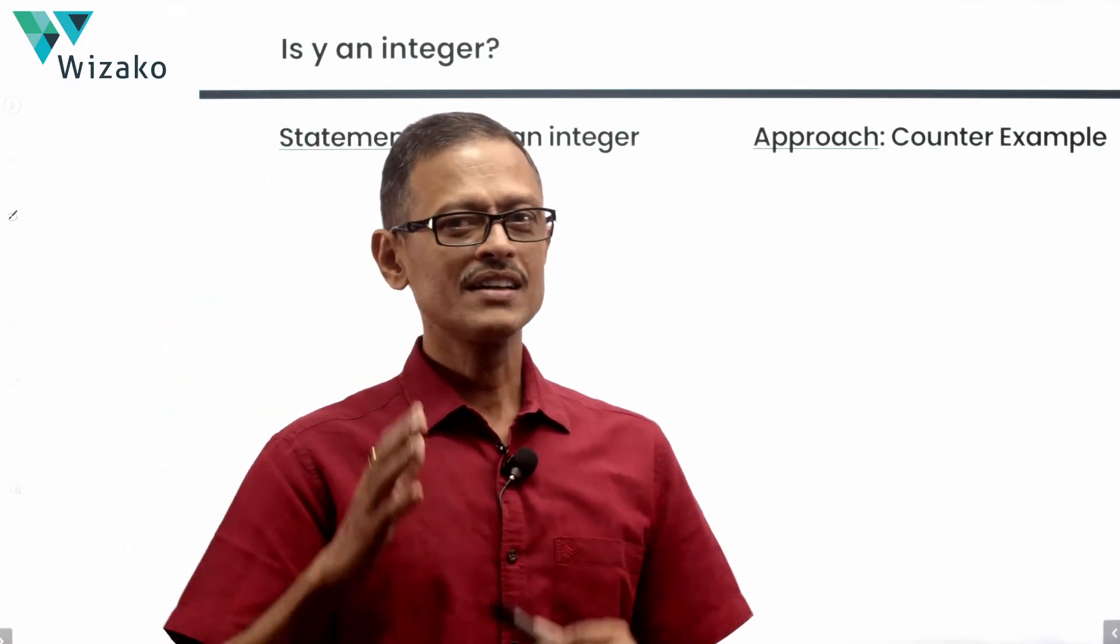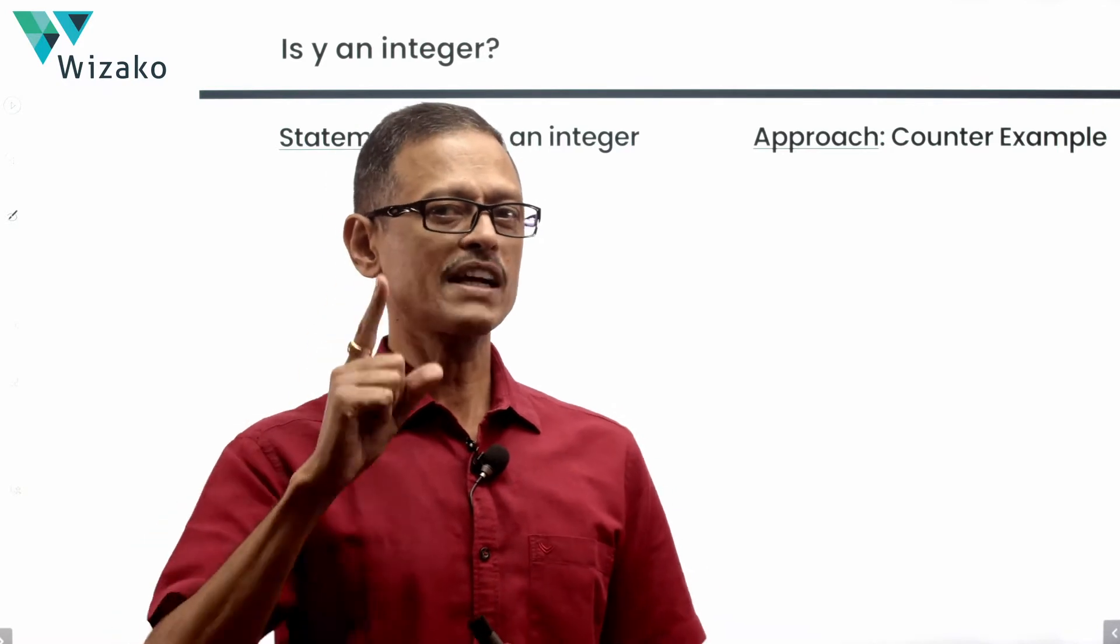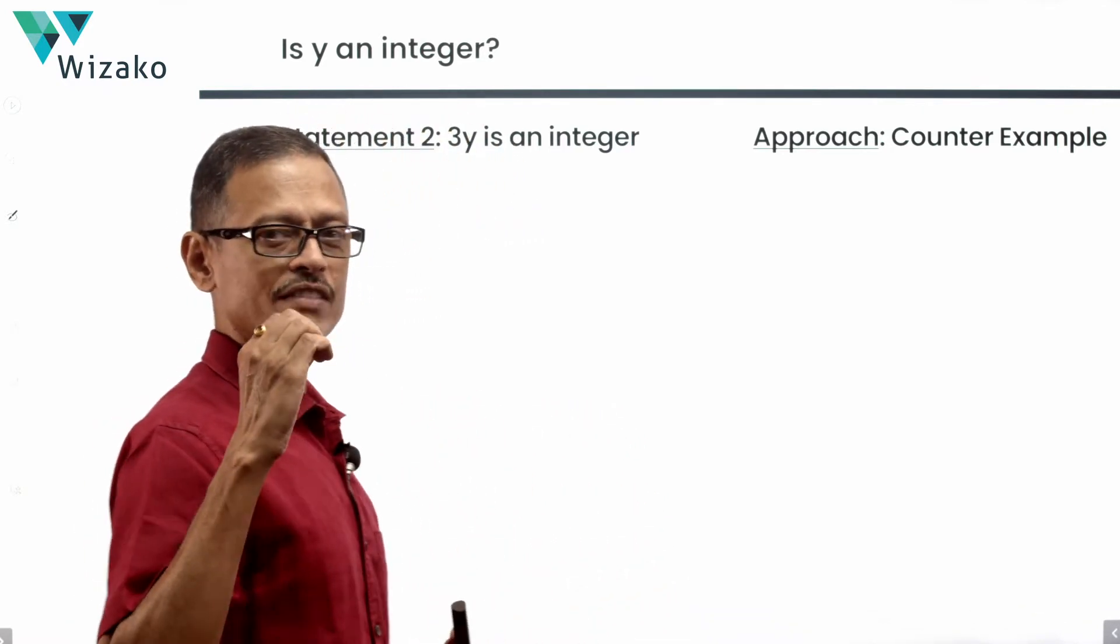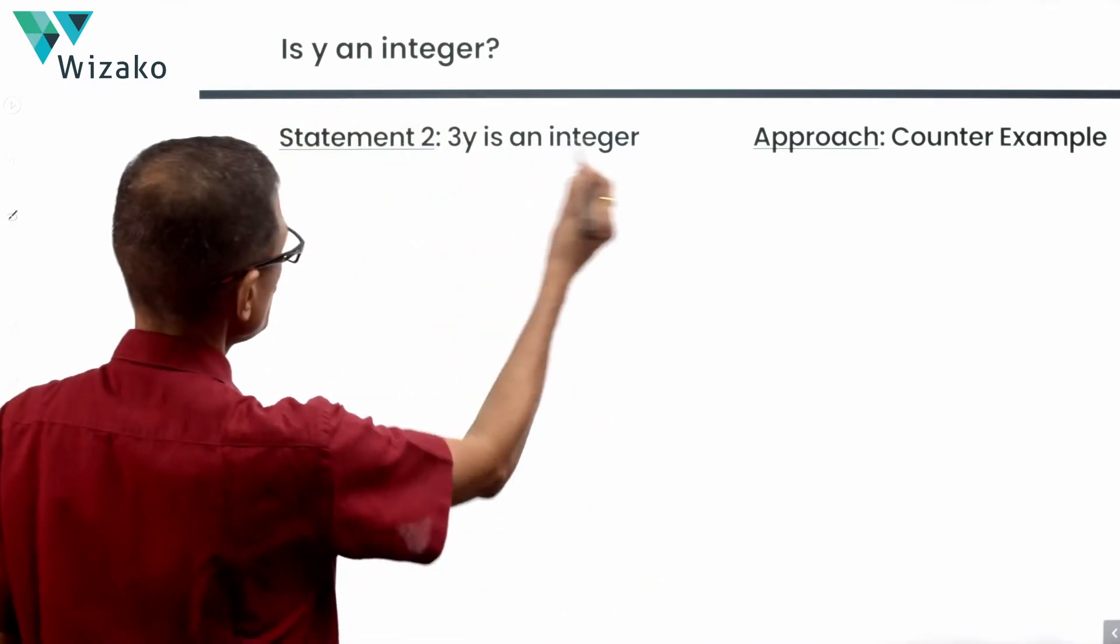As I mentioned with statement 1, pick a value for 3y. Don't pick a value for y. The trap is when we pick a value for y. 3y is an integer.